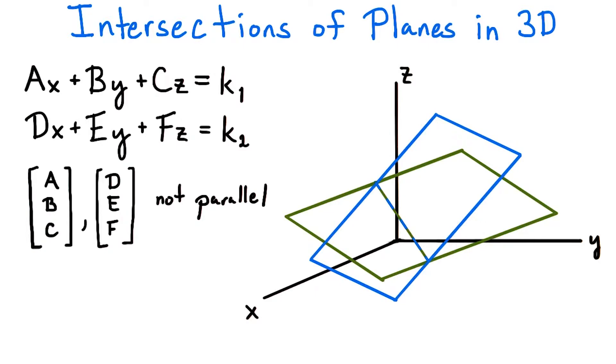Given two non-parallel planes, I claim their intersection will be a line instead of a single point. From the picture, this may seem intuitive, but how can we show this fact algebraically in all cases? Let's use a tool from the previous lesson, the cross product.